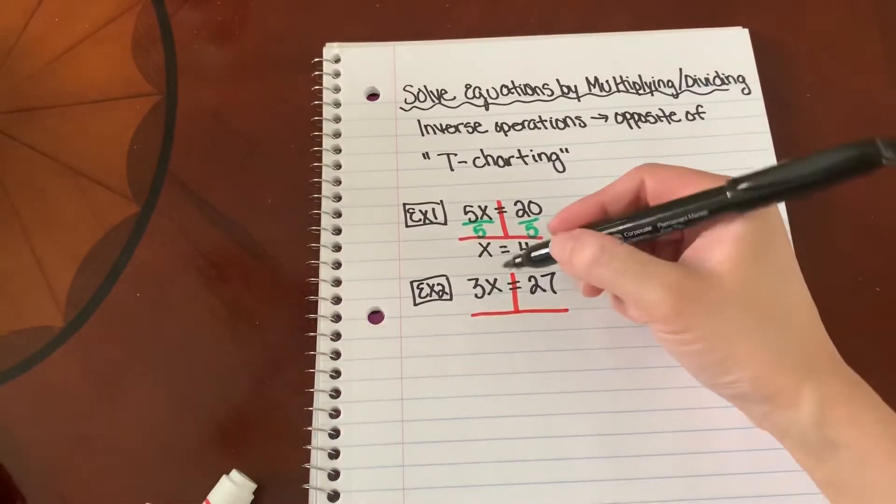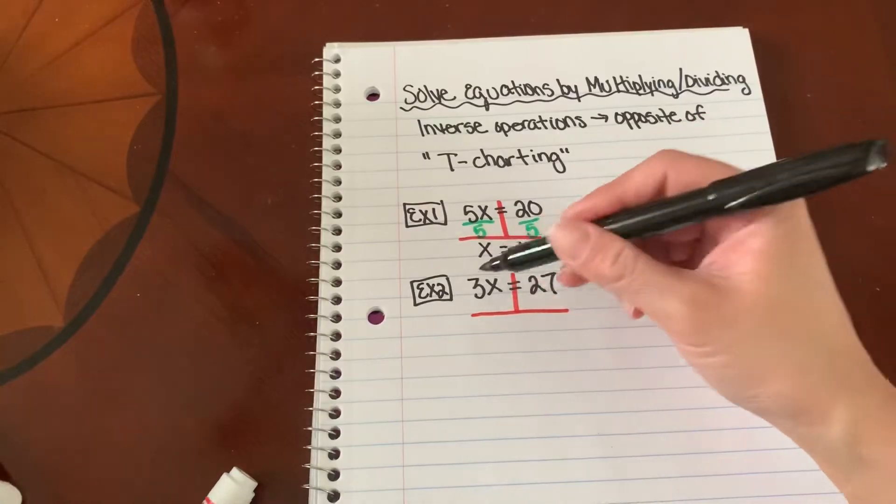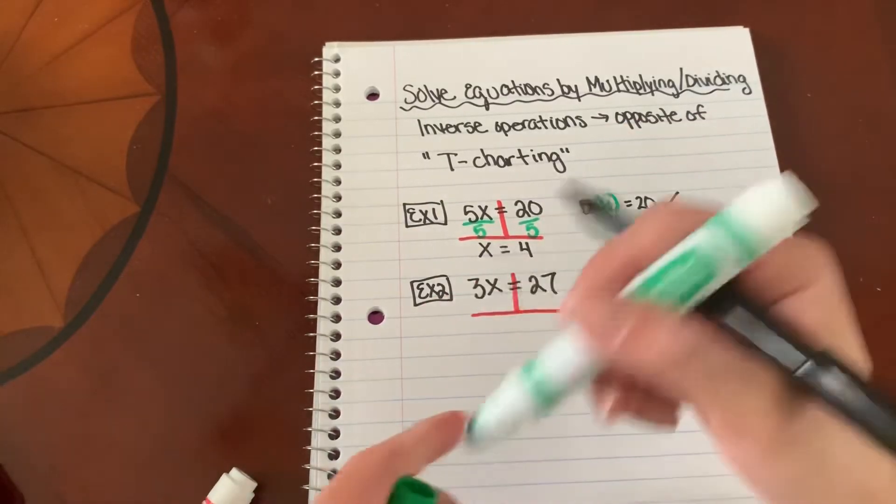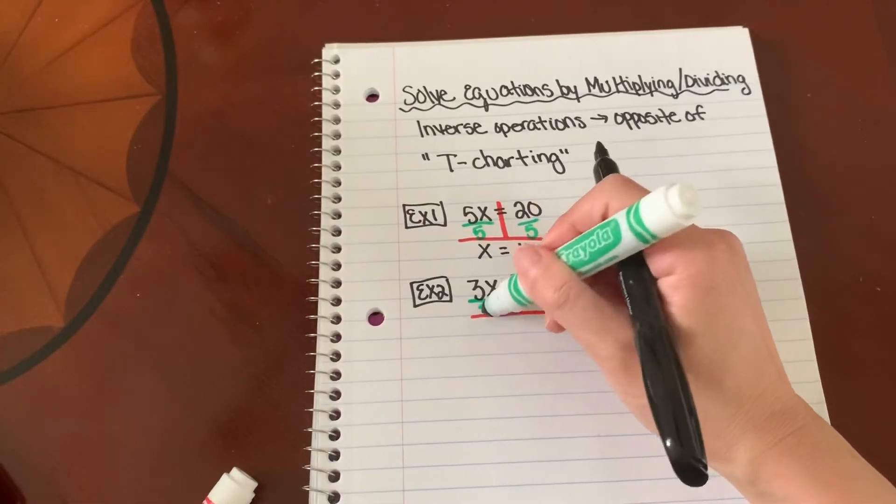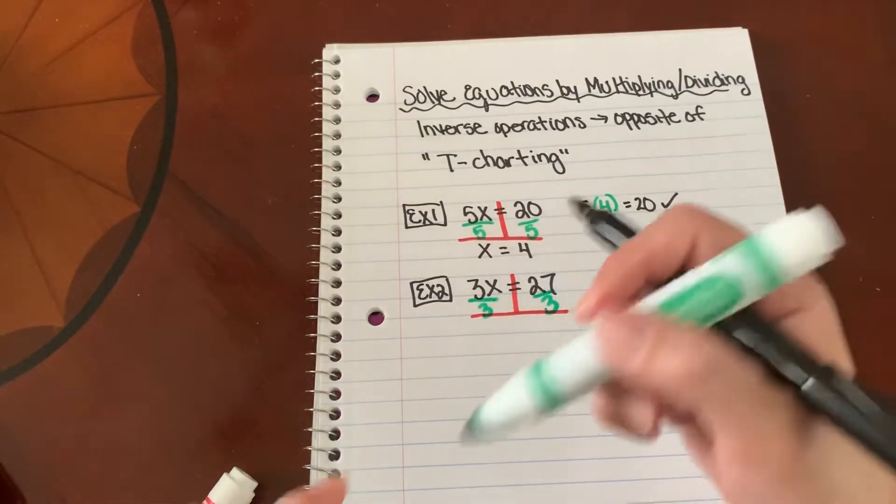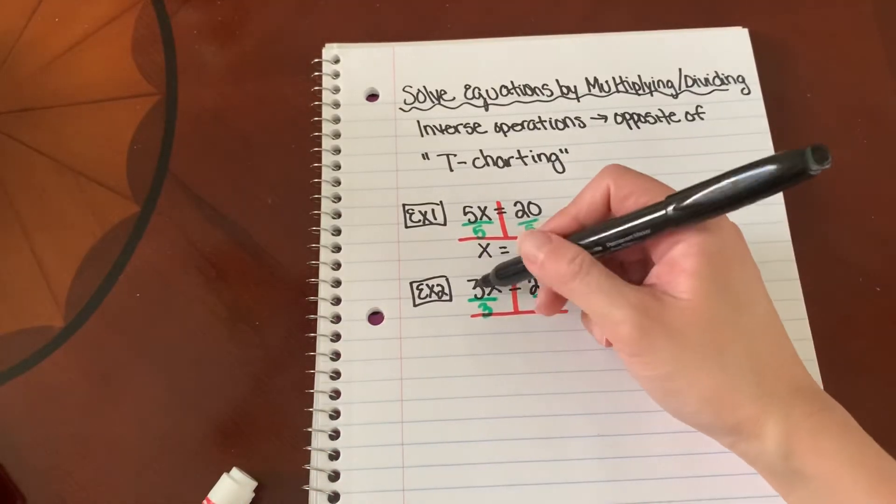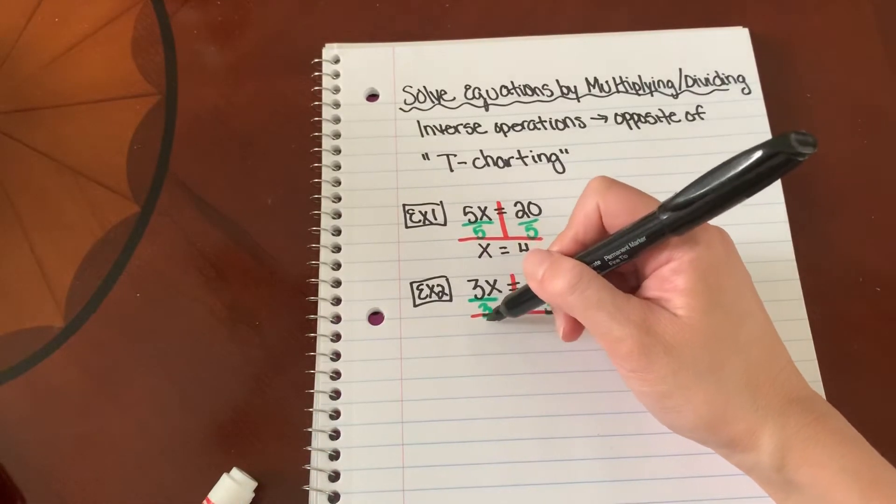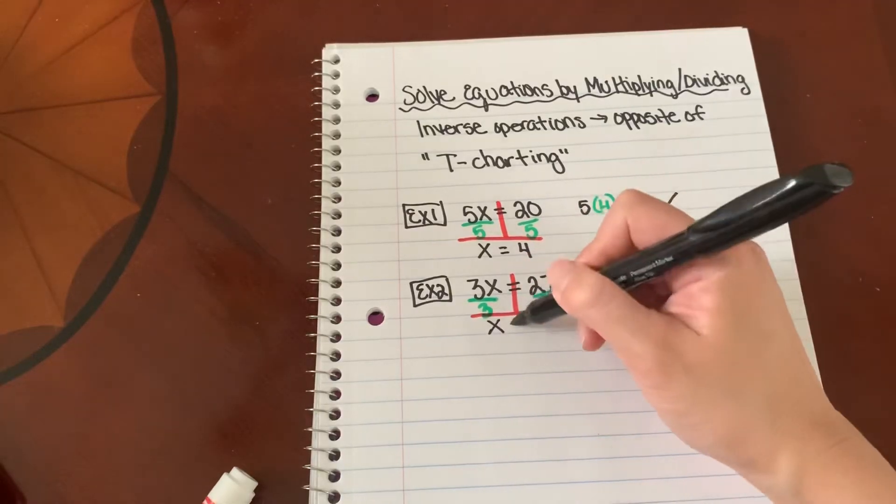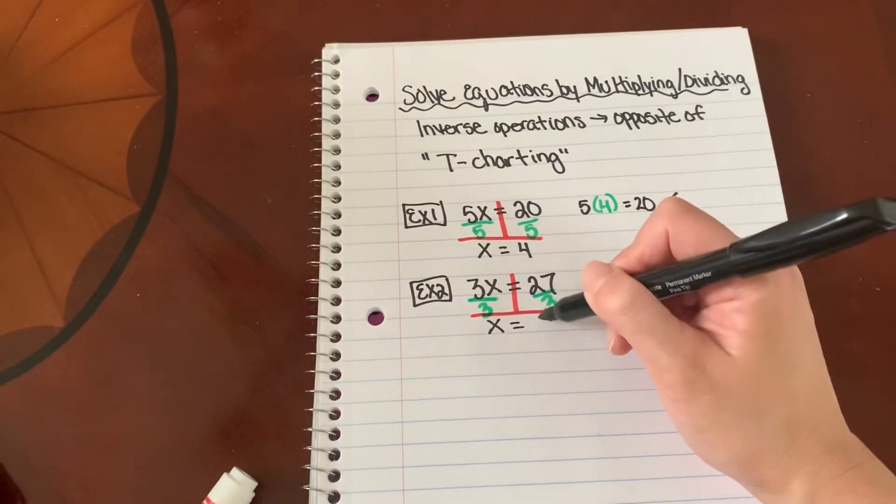Okay. So what is the inverse of 3 times x? That's going to be divided by 3. So I have 3 divided by 3 is 1x. And what is 27 divided by 3? 9.